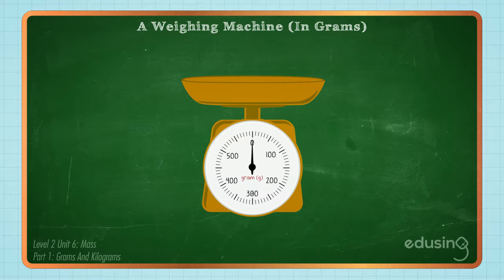This weighing machine is marked out at every 100 grams. Let's measure and compare masses.